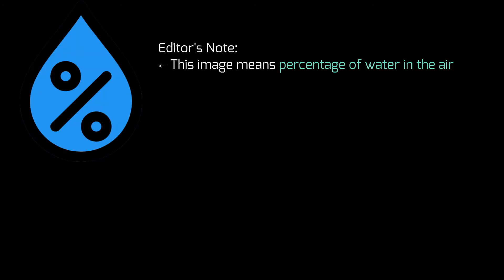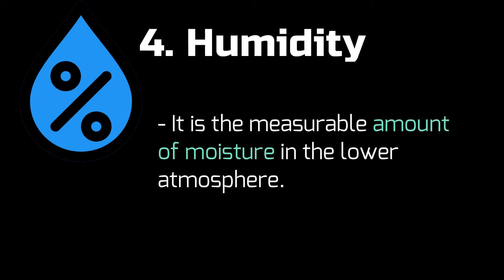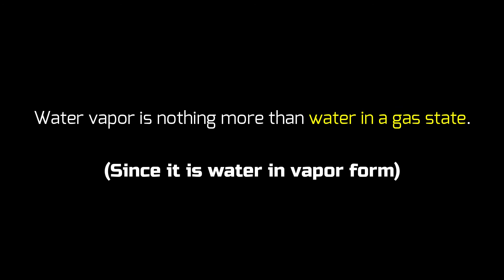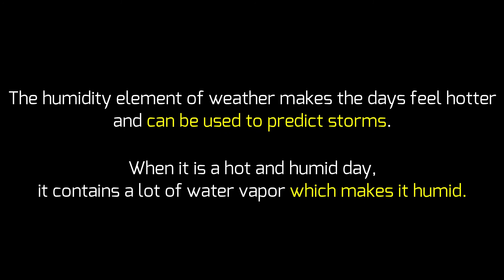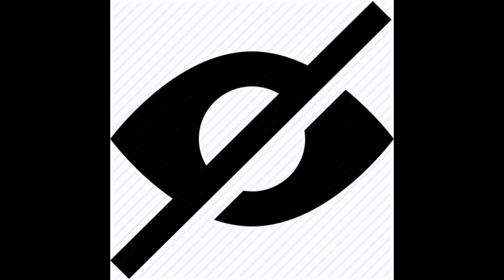Humidity is the amount of water vapor in the atmosphere — it is the measurable amount of moisture in the lower atmosphere. Water vapor is simply water in gas form. The humidity element of weather makes the day feel hotter and can be used to predict storms. Although humidity can be felt, it is usually not visible to the naked eye.